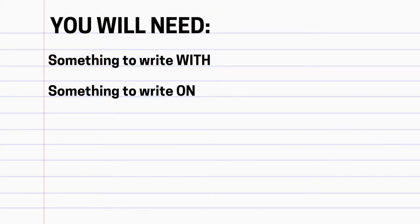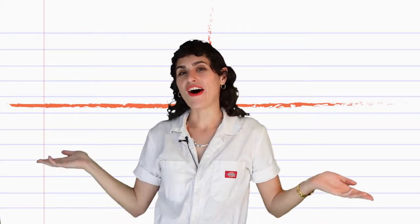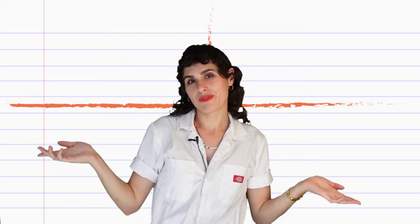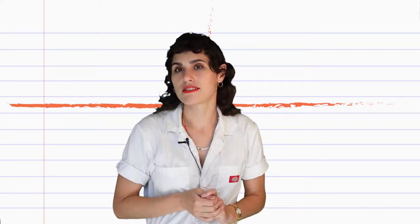Before we get started brainstorming, you'll want to have something to write with and something to write on. Use your writing tool to make four separate sections on your paper, one for each of the components.